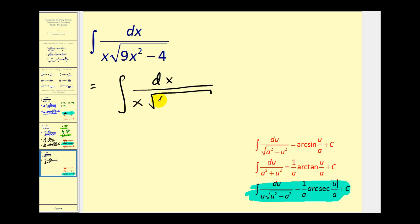So notice that u squared must equal nine x squared. So that means u would be three x. And then a squared must equal four, so this would be minus two squared. Now we do have a little bit of a problem here. We can see that a is going to equal two, and u has to be equal to three x. But notice that we have to have a u outside the square root as well, and we don't. We only have x.